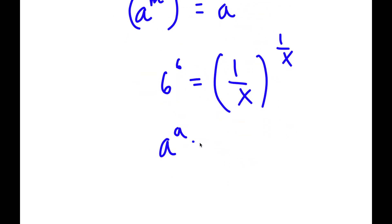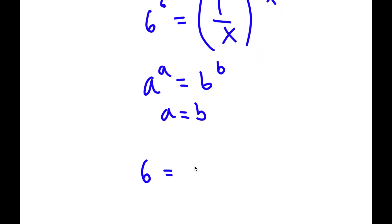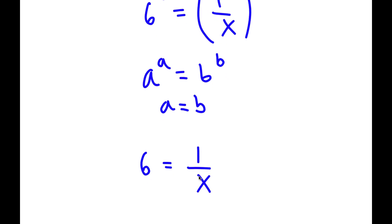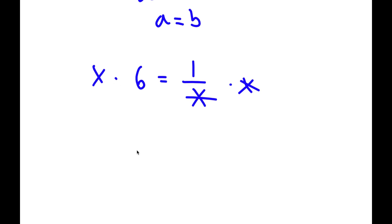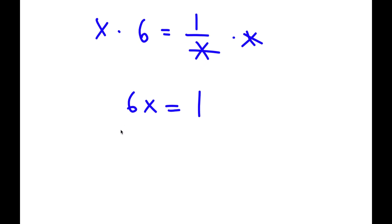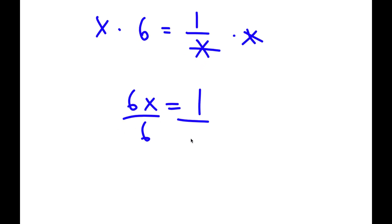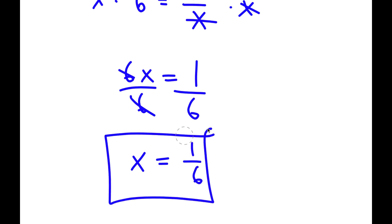If I have something with the form a to the power of a is equal to b to the power of b, this means that a is equal to b. So in this case, 6 is equal to 1 over x. If I multiply both sides by x, these cancel out and I get 6x is equal to 1. Dividing both sides by 6, I get x is equal to 1 over 6. So this is my answer.